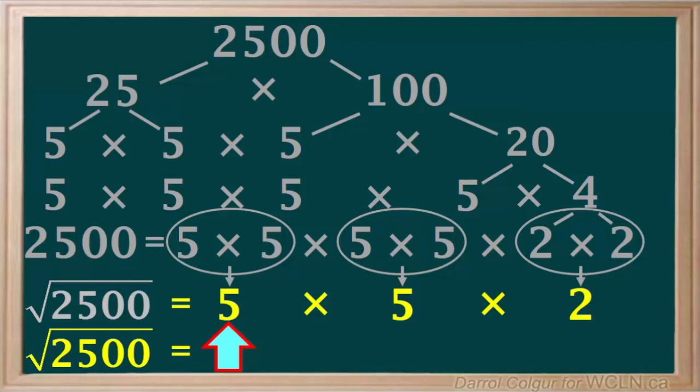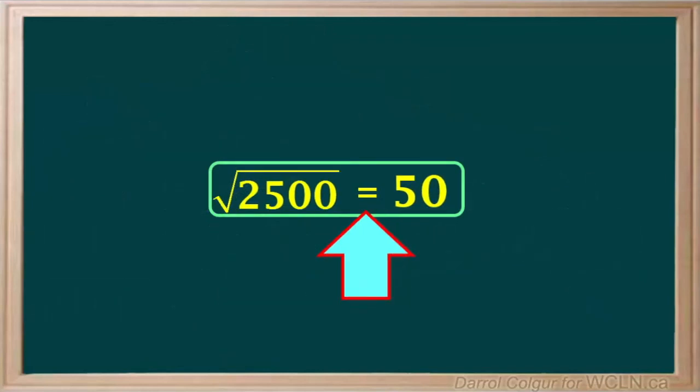So the square root of 2500 is 5 times 5, which is 25, times 2, which equals 50. So now we know the square root of 2500 is 50.